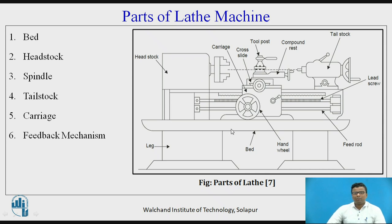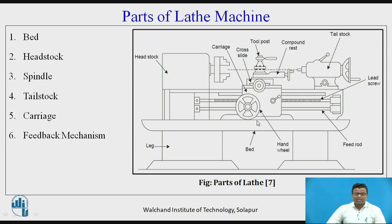Headstock, bed — which is a base for the lathe machine and also consists of bed ways. This is a chuck, the type of chuck we are discussing in detail in the lathe accessories. The spindle is present inside the headstock. This is the carriage which consists of a saddle, compound rest, cross slide, and the tool post. The carriage is the assembly of these four components.